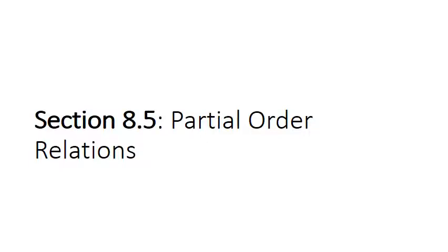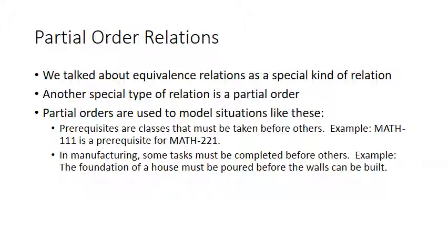That finishes section 8.4. Let's go ahead to section 8.5, which is partial order relations. We've talked about equivalence relations, which have reflexivity, symmetry, and transitivity. There's another type called a partial order. Partial orders are used to model many useful situations — for example, class prerequisites (Math 111 is a prerequisite for Math 221) or manufacturing tasks that must be completed in order, like building a foundation before walls, walls before a roof or wiring.